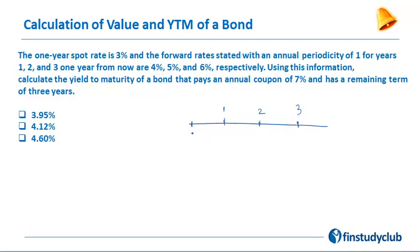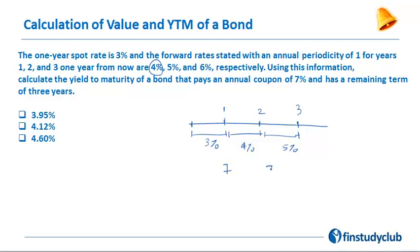The 1-year spot rate has been given as 3%. The 1-year forward rate 1 year from now is 4%, 2 years from now is 5%, and 3 years from now is 6%. These are forward rates.